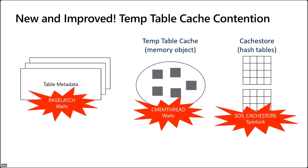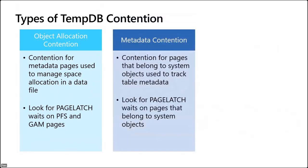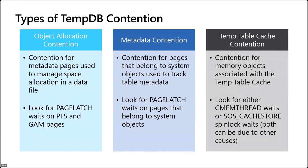To summarize the three flavors of TempDB contention: Object allocation contention — contention on PFS and GAM pages used to manage space — shows as page latch waits on pages 2:1:1 and 2:1:2. Metadata contention — contention on system object pages tracking table metadata — shows as page latch waits on system object pages in TempDB. TempTable cache contention — contention on memory objects supporting the temp table cache — shows as cmem thread waits or SOS cache store spinlock waits, which requires more advanced debugging with CSS.